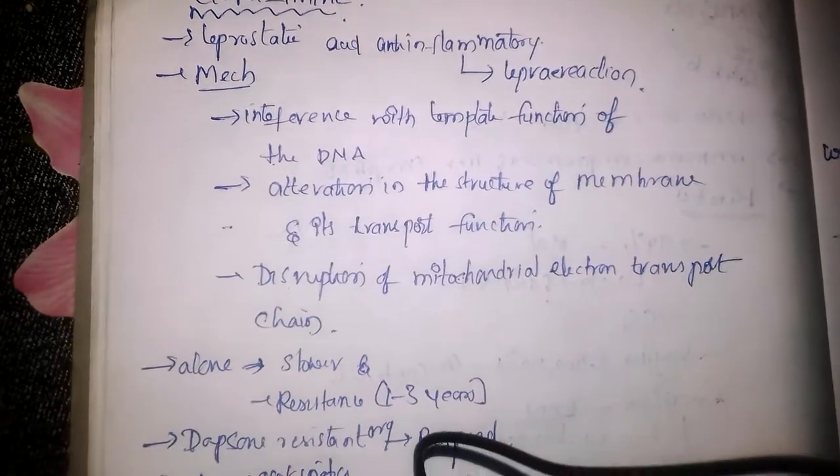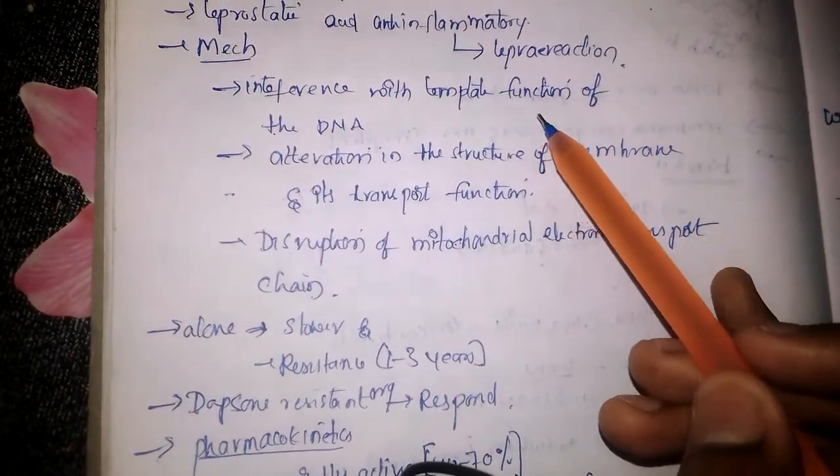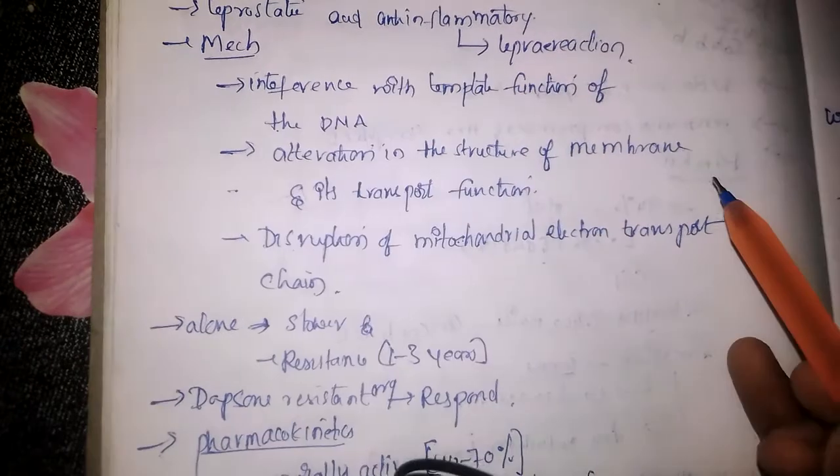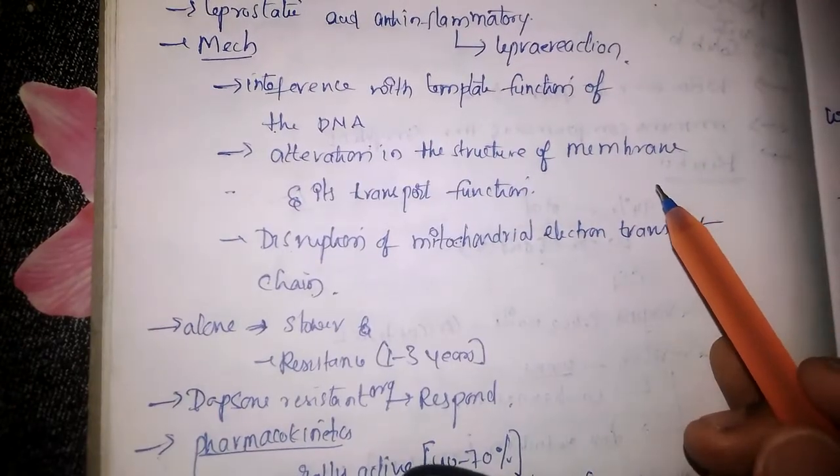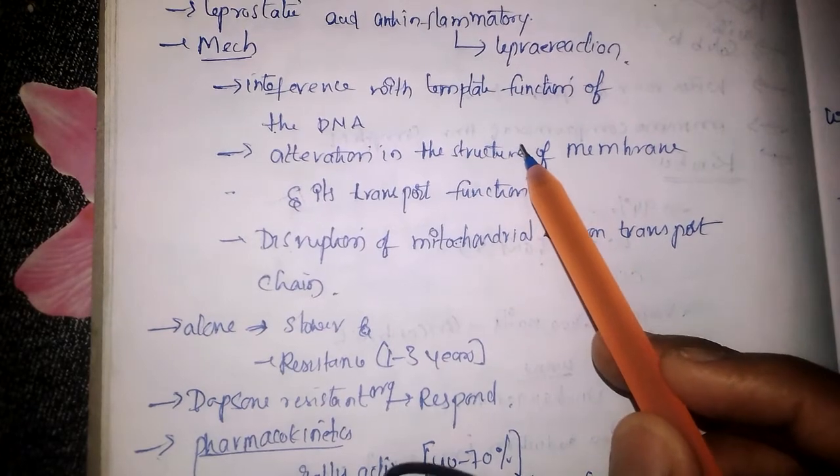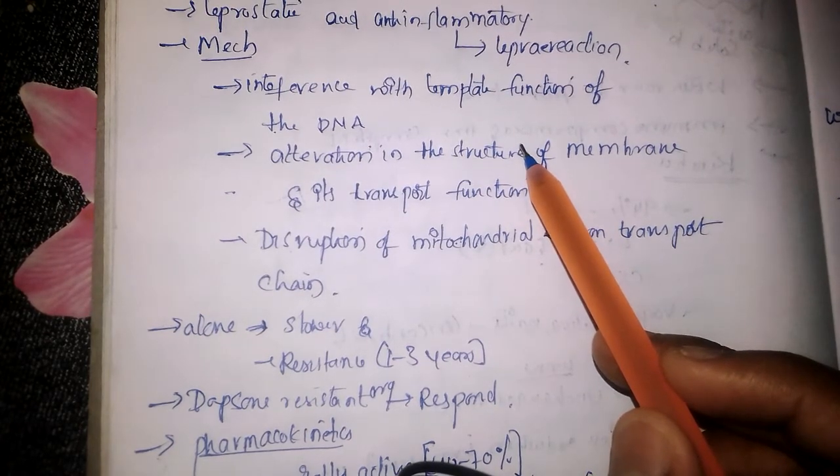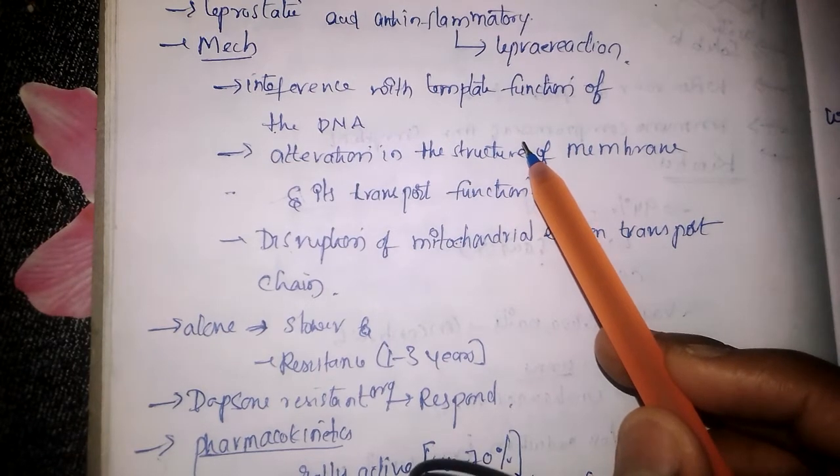The mechanism of action of Clofazimine involves three main mechanisms. The first mechanism is that it interferes with the template function of DNA of Mycobacterium leprostatic.